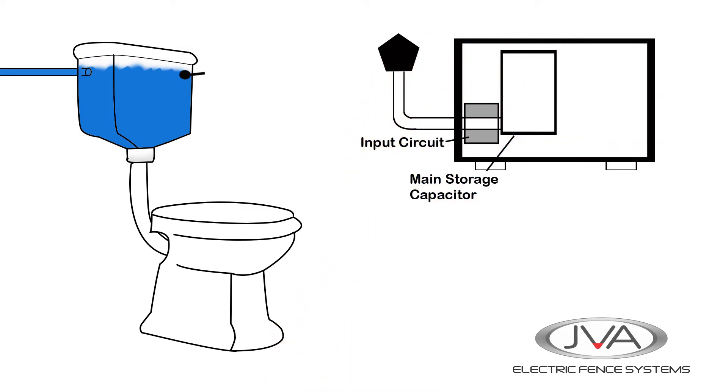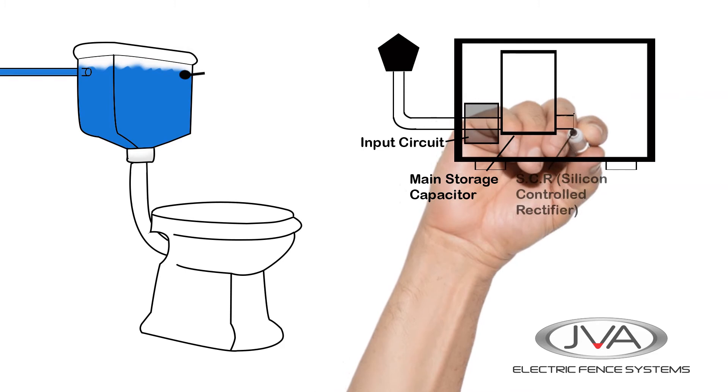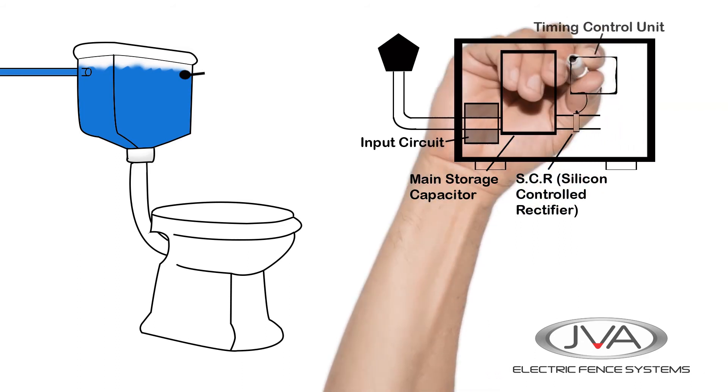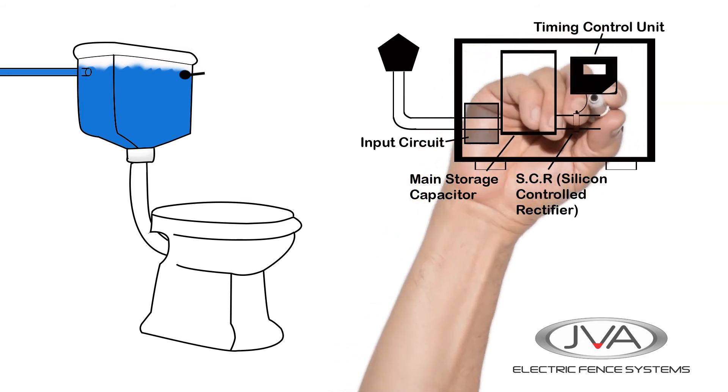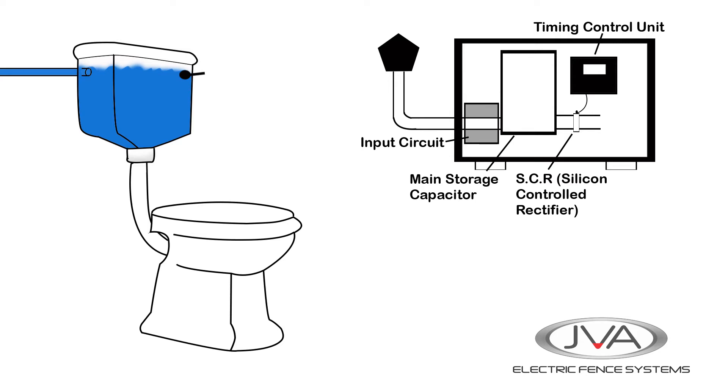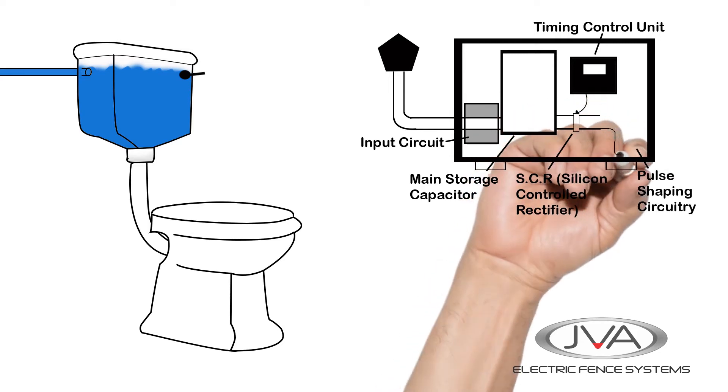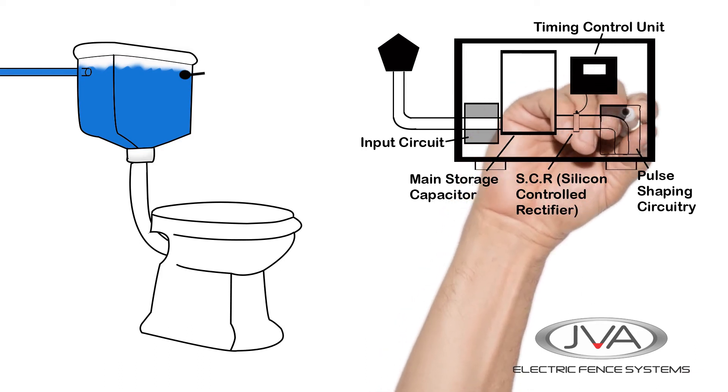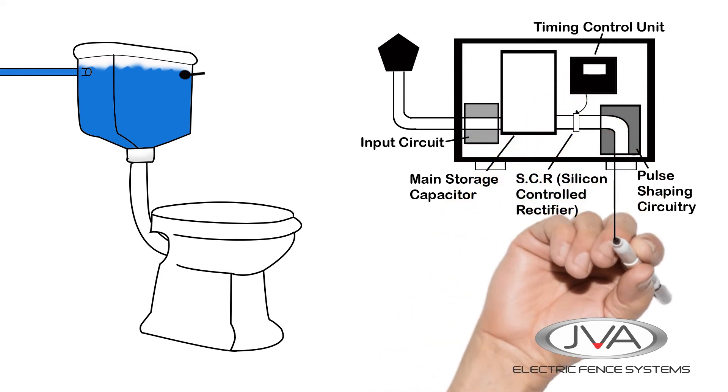The capacitor is linked to an electrical switch, usually an SCR which stands for silicon controlled rectifier. An SCR is a rugged and very fast electrical switch which can handle high voltages and large electrical currents. The SCR is controlled by a timing circuit which tells it when to open.